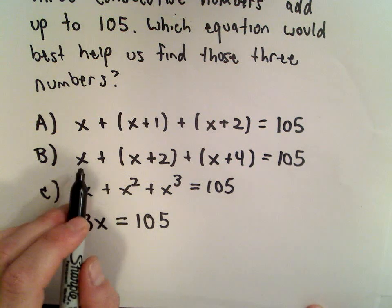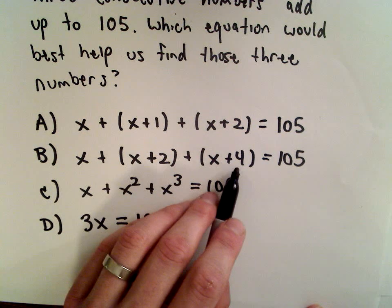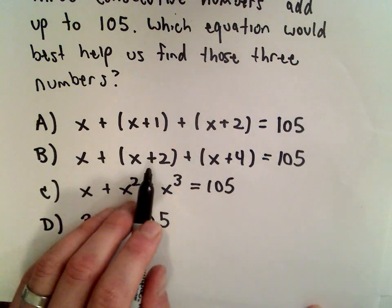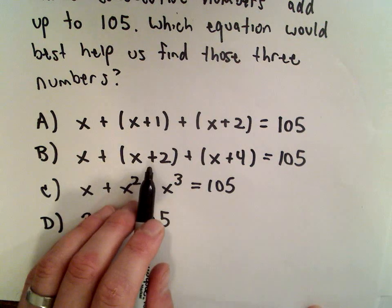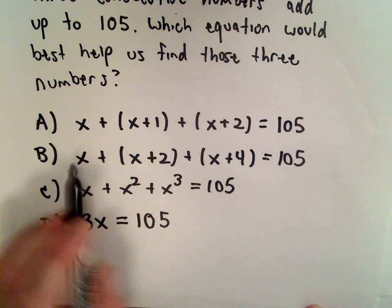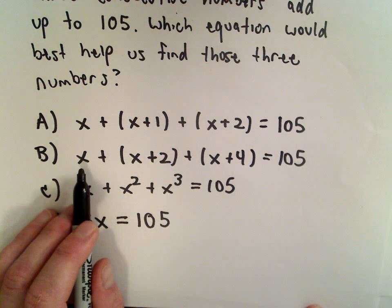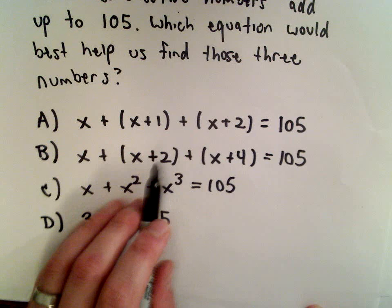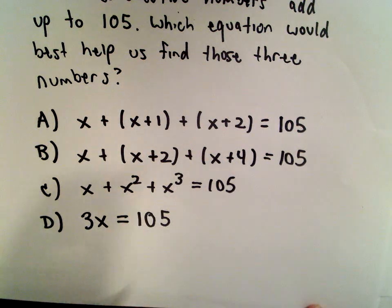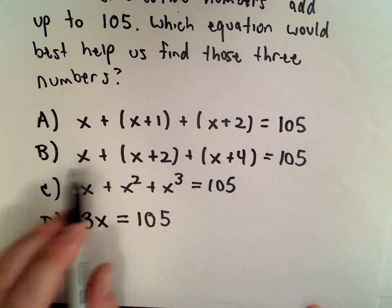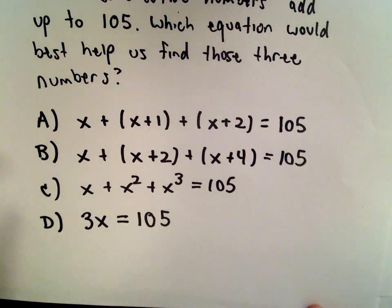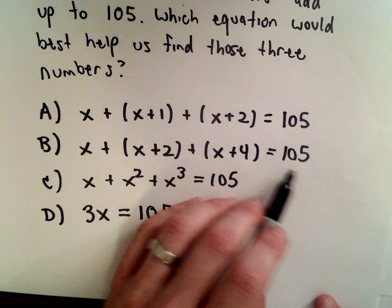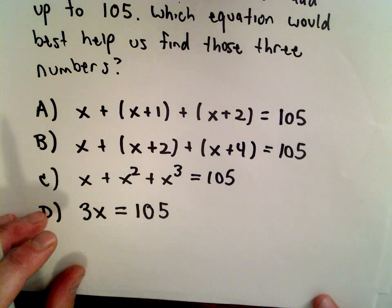Notice B, you're going from x to x plus 2 to x plus 4. In that case, you're adding up either odd numbers or even numbers. You're starting with some number, you go 2 after it, and then another 2 after that one. So part B would be the type of solution you would get if you were adding up, for example, odd numbers. It's going to have to be odd if it's going to add up to 105. That's why I'm saying odd.